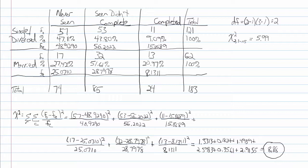Now that we have rejected the null hypothesis, we need to do additional work to figure out where in the contingency table the cells depart from the assumption of independence. We will use the confidence interval for the difference of two proportions as our follow-up procedure.